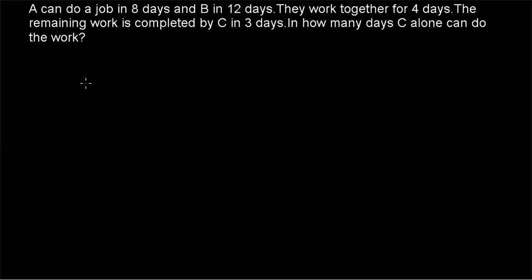Hi friends, welcome to today's class. Today's question is: A can do a job in 8 days and B in 12 days. They work together for 4 days. The remaining work is completed by C in 3 days. In how many days can C alone do the work?